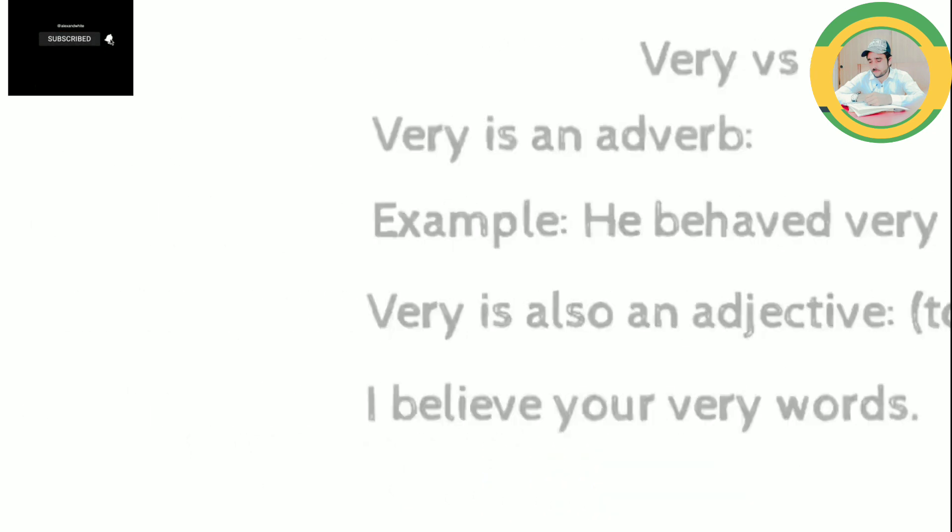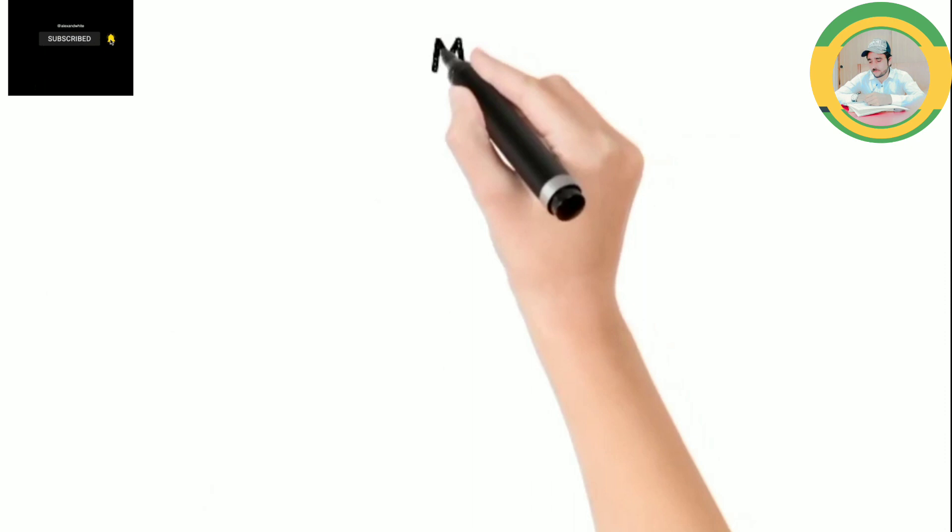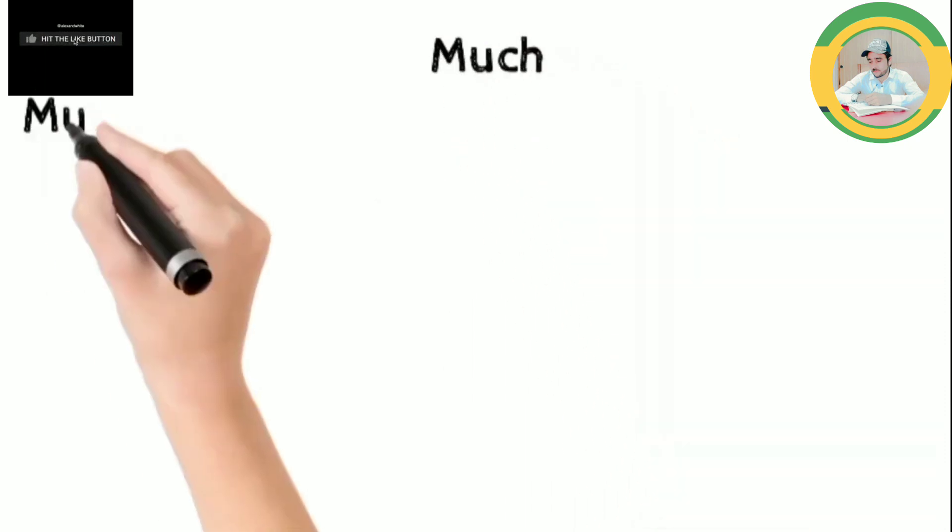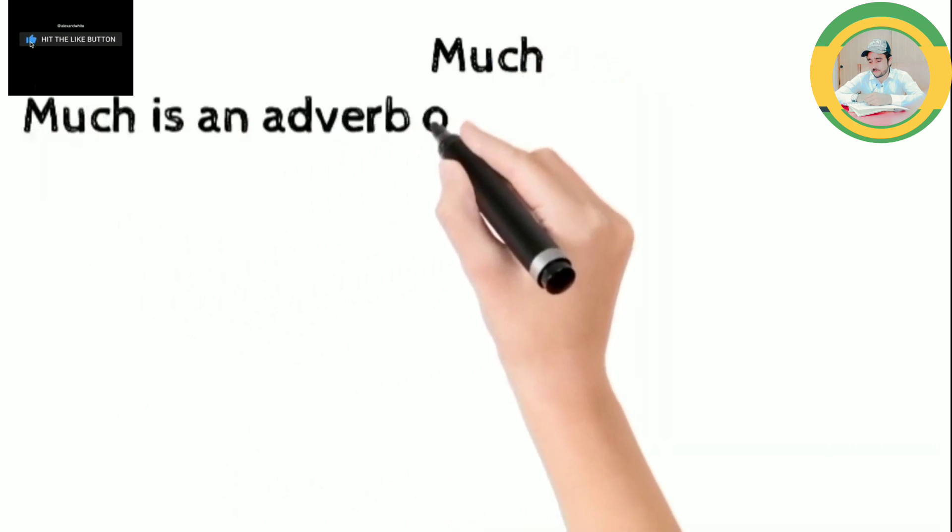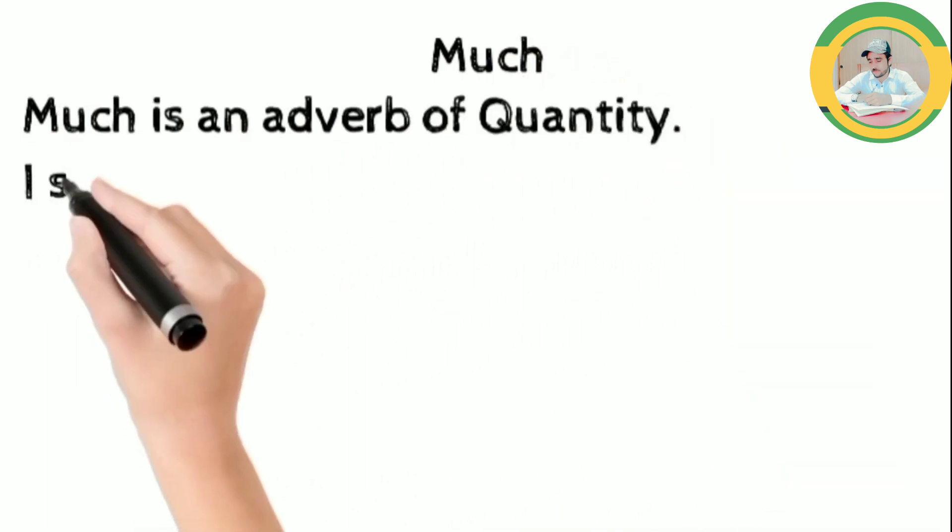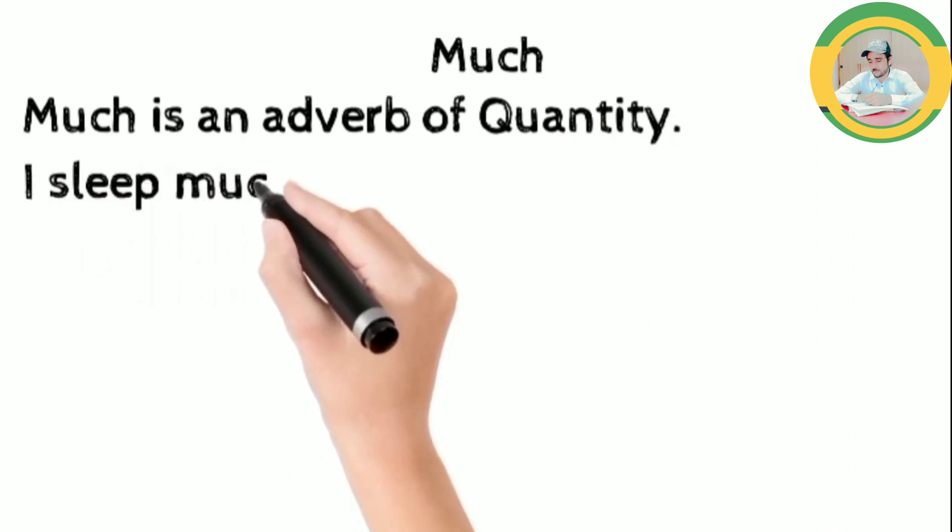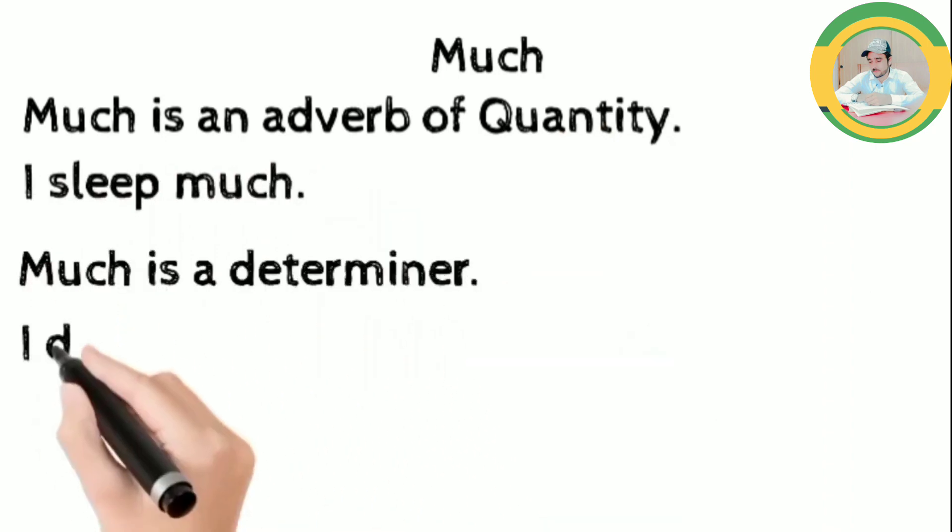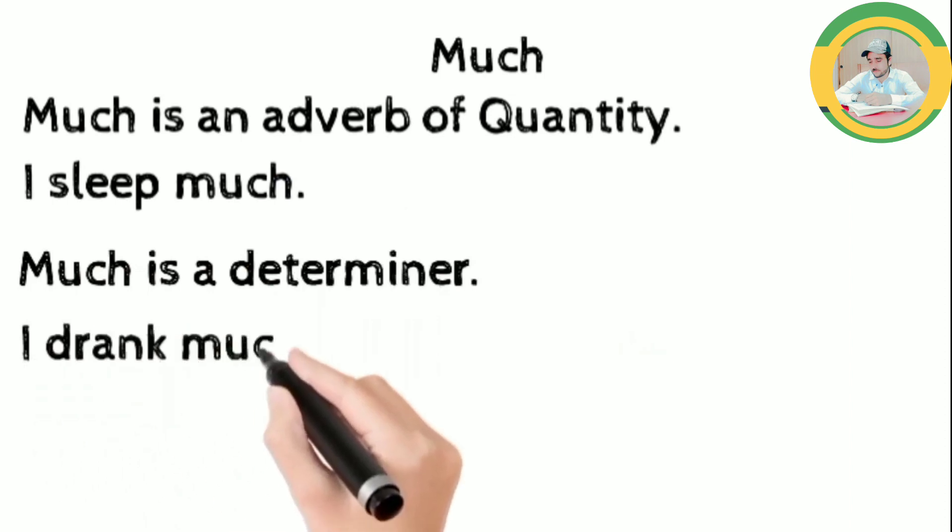Now let's come to the word much. So, what's much? Much is an adverb of quantity. For example, I sleep much. And much is also a determiner. For example, I drank much water.